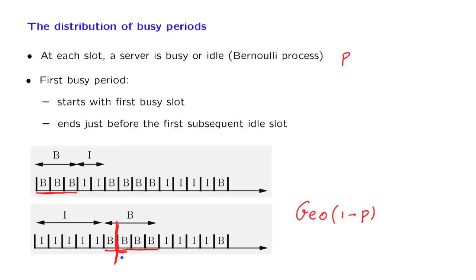So the length of this blue interval that starts at this slot and extends until the first idle slot has a geometric distribution with parameter 1-p. But now notice that the length of this blue interval is exactly the same as the length of this red interval.